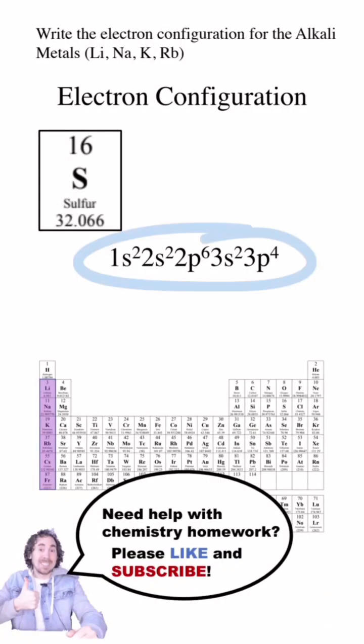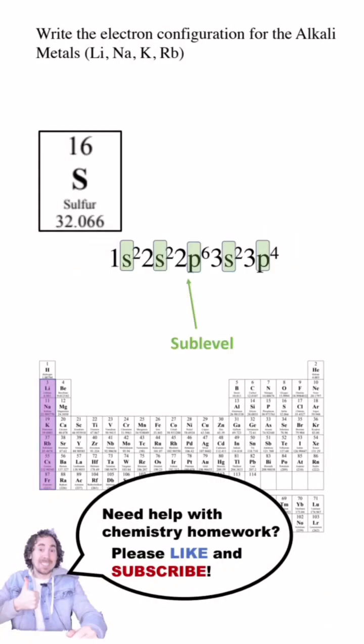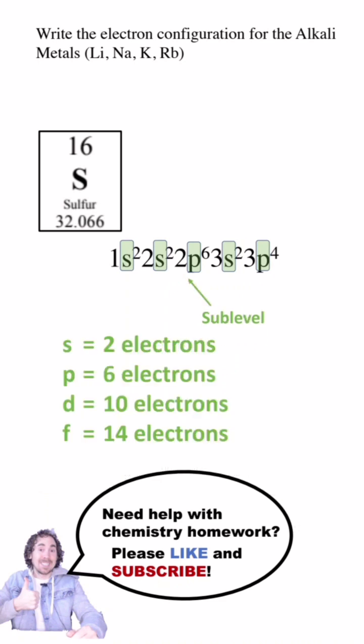An electron configuration shows the distribution of electrons in different sublevels around the nucleus. The S sublevel holds a maximum of 2 electrons, P holds a max of 6, D 10, and F 14.